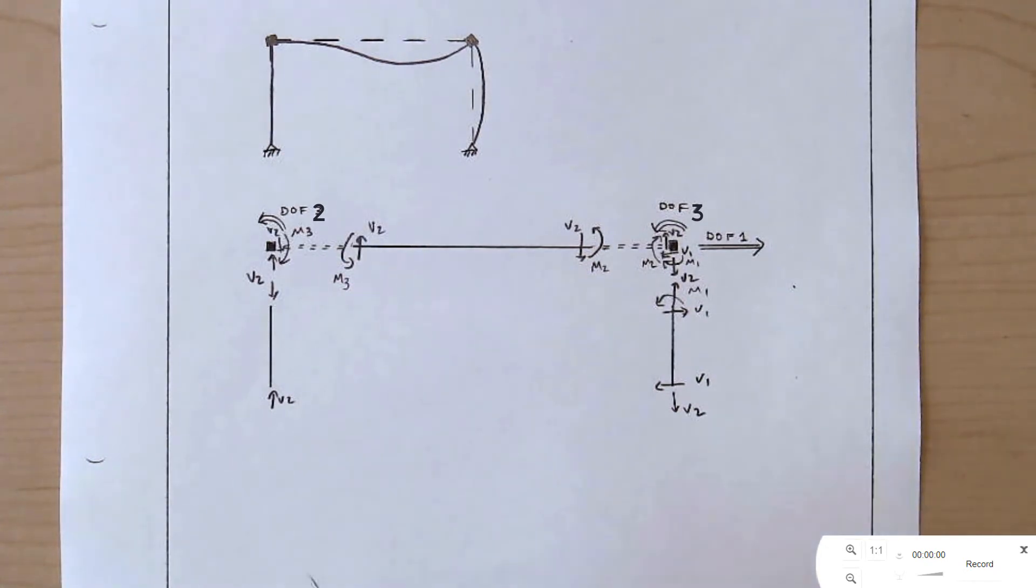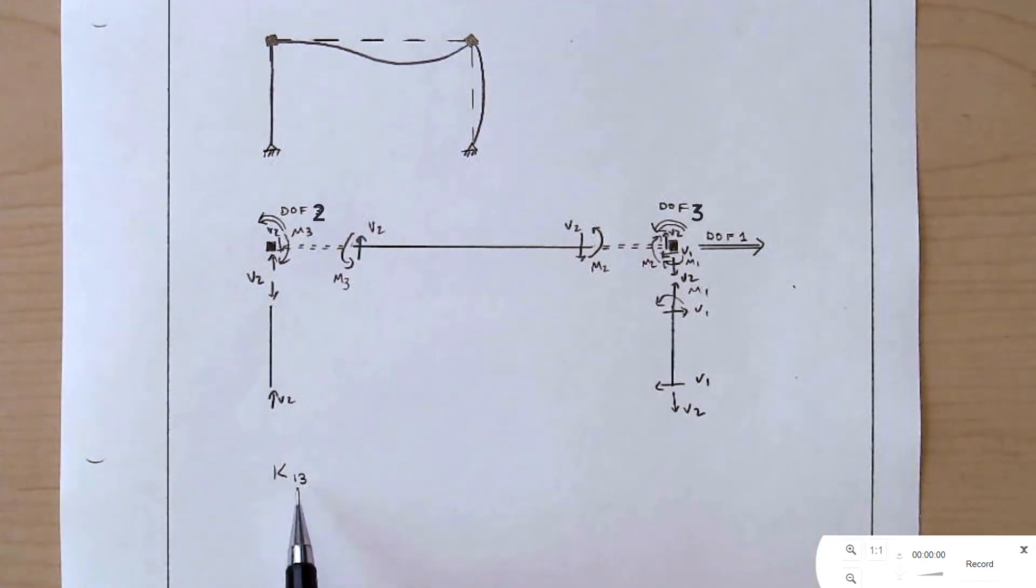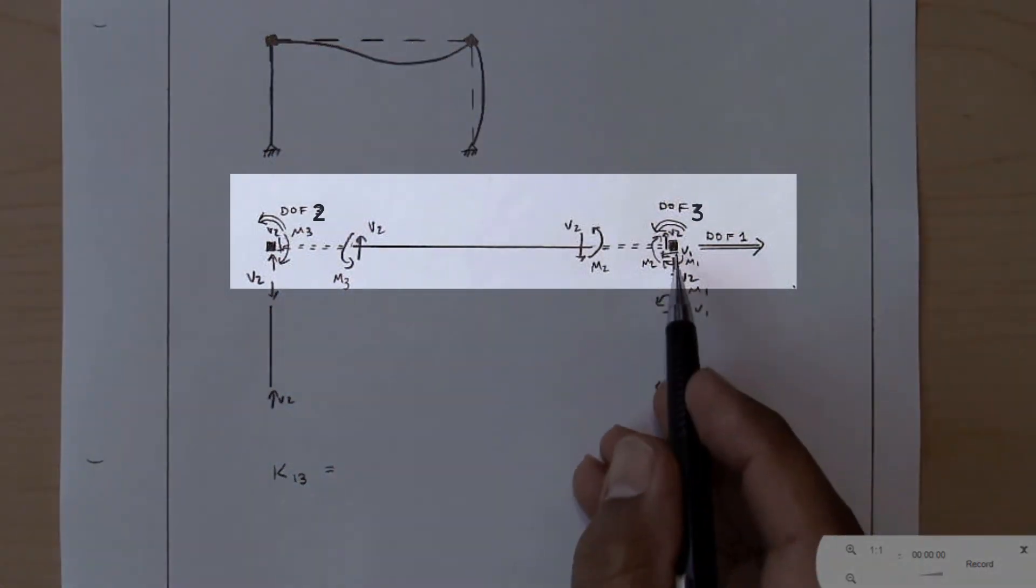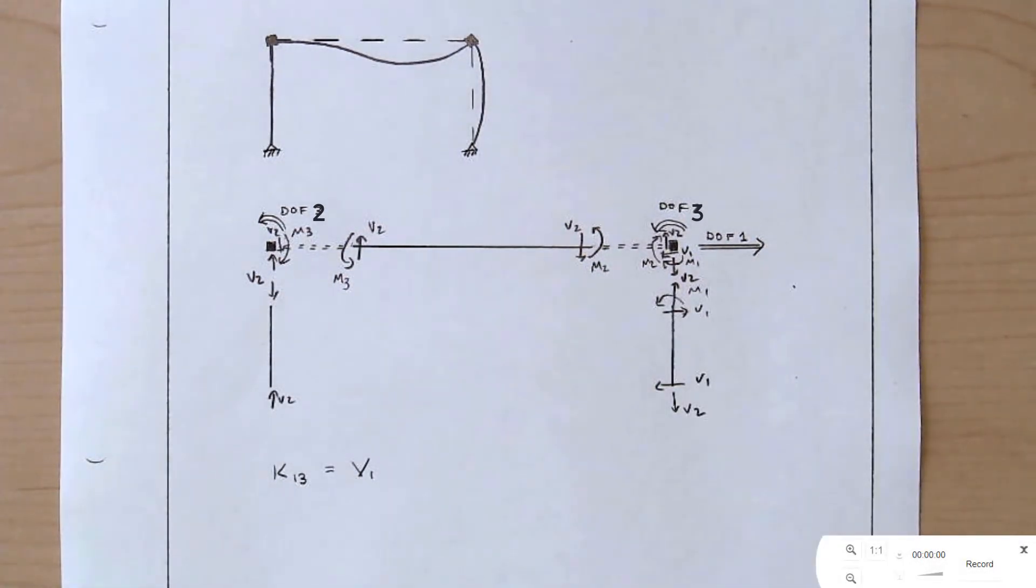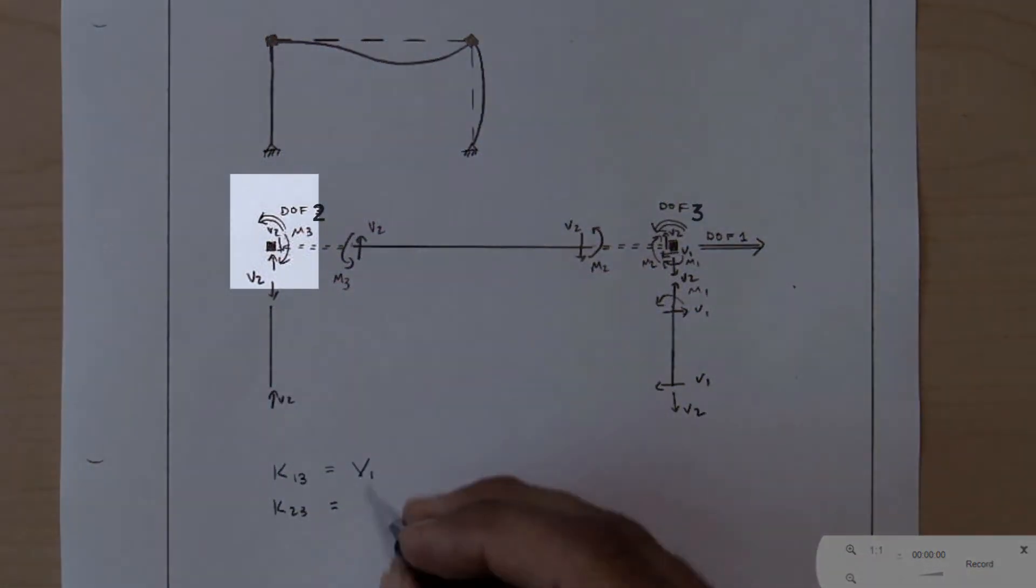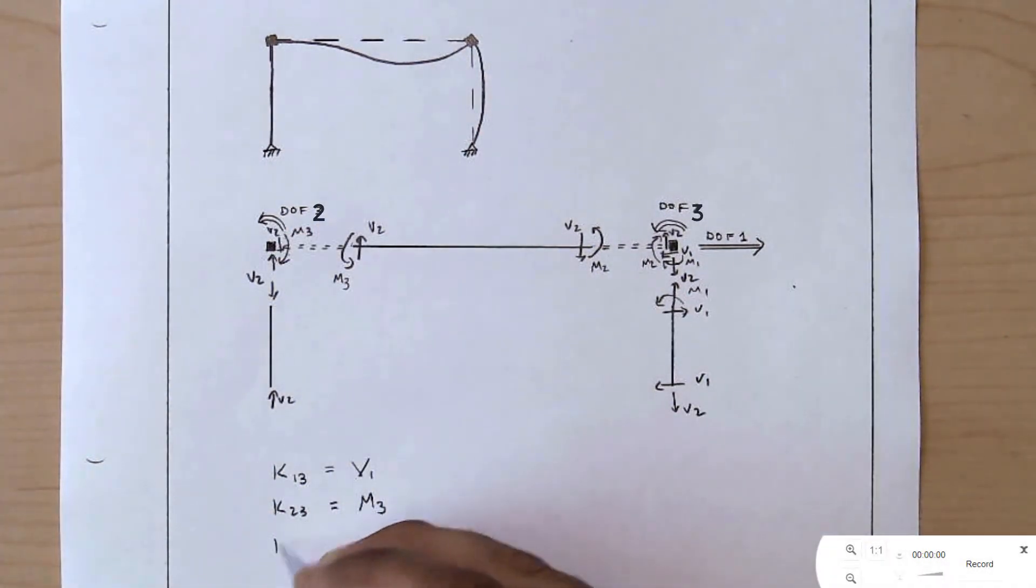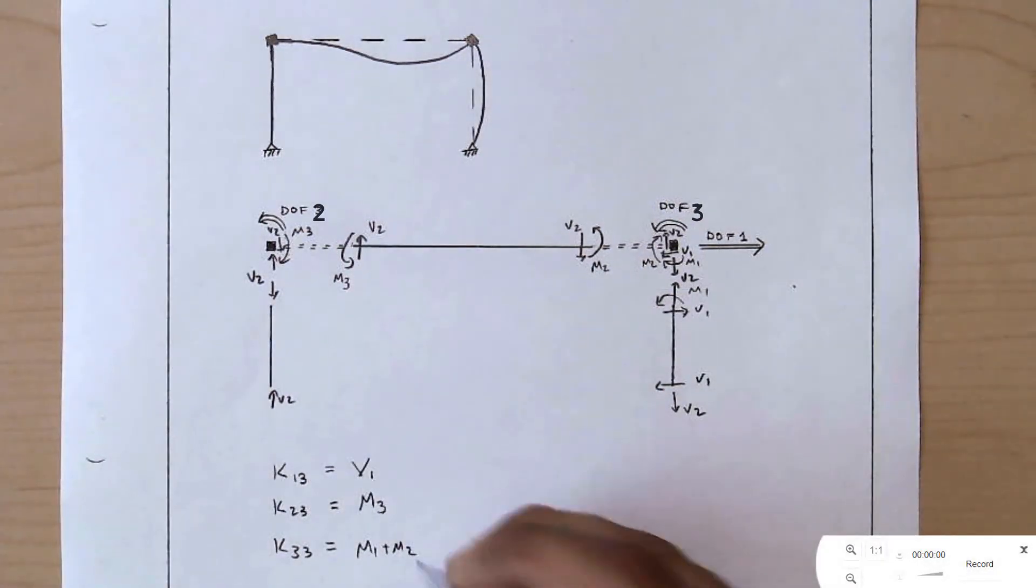Once again, we'll keep track now of K13, the force at degree of freedom 1 due to this rotation now at degree of freedom 3. That's equal to the force right here. There's no other force here. V1, it's opposite to the degree of freedom, so it's positive. K23 is the moment over here. M3, opposite to the degree of freedom, so it's positive. K33 is the moment over here. M1 plus M2, opposite to the degree of freedom, so it's positive.